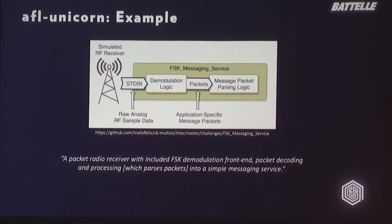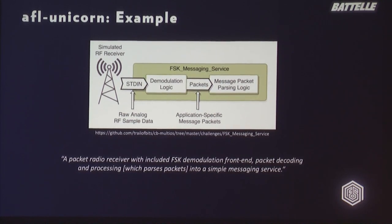Instead of going into the internals of AFL Unicorn, I thought it would be better to give an example of how we've used it and give you the workflow you can apply to your own problems. For this example we're going to use one of the binaries from the CGC — the Cyber Grand Challenge — called the FSK Messaging Service. This messaging service is built to replicate an RF piece of hardware. The service takes raw analog sample data on standard in, feeds it through fairly complex demodulation logic, and at the end you end up with packets that are human readable — type-length-value fields that represent something like a chat program.